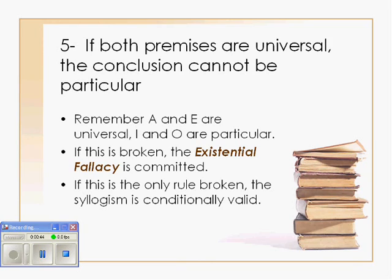Rule number 5 says that if both premises are universal, the conclusion cannot be particular. A and E are universals; I and O are particulars. So if the premises are both an A or an E, and the conclusion is an I or an O, it's a violation of rule number 5.